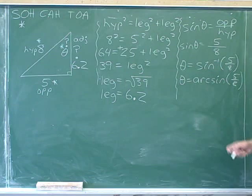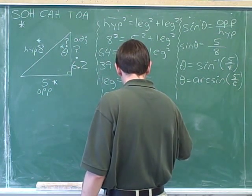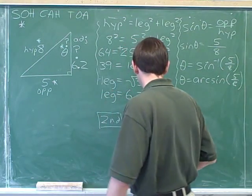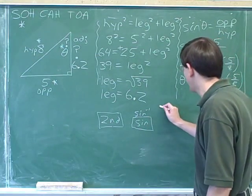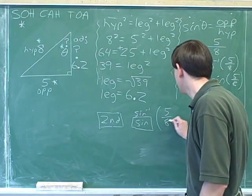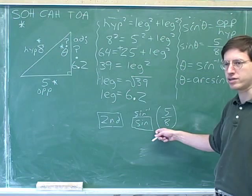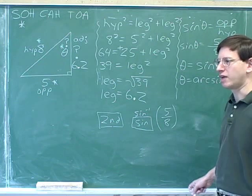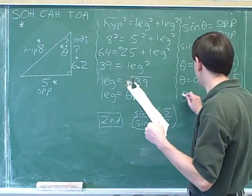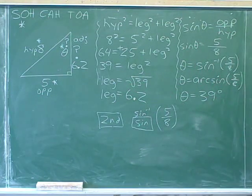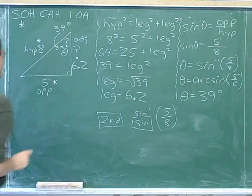Now we have to use our calculator to take the inverse sine of 5/8. On the TI-83 or 84, you would hit second, then the sine button to get inverse sine. The calculator puts in a left parenthesis; then you type 5 divided by 8, close the parenthesis, and hit enter. If your calculator doesn't put the left parenthesis in automatically, you have to do it yourself, because the thing we're taking the sine of has two parts and we need to tell the calculator both are part of the input. We found that the inverse sine of 5/8 is approximately 39 degrees. That angle is 39 degrees.